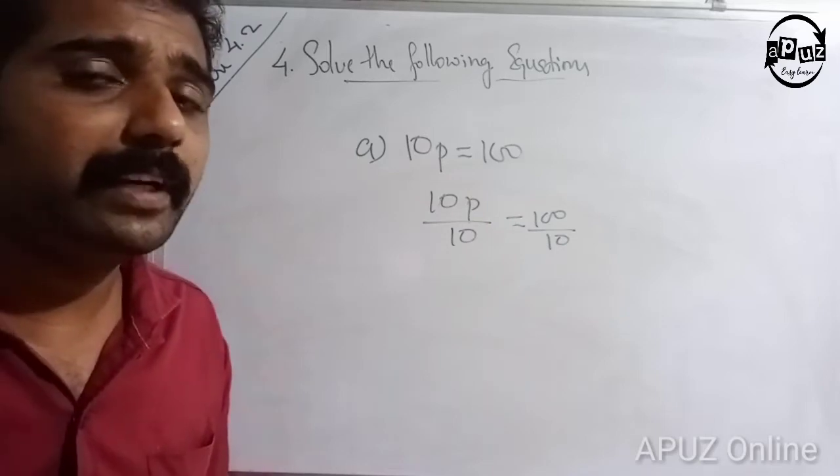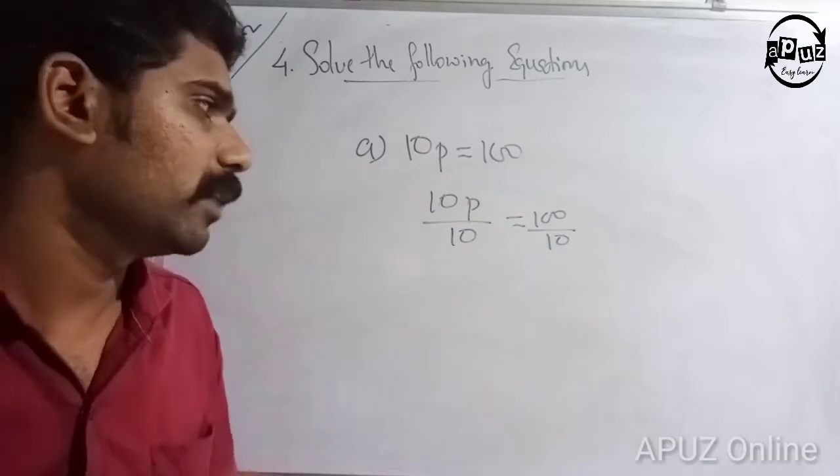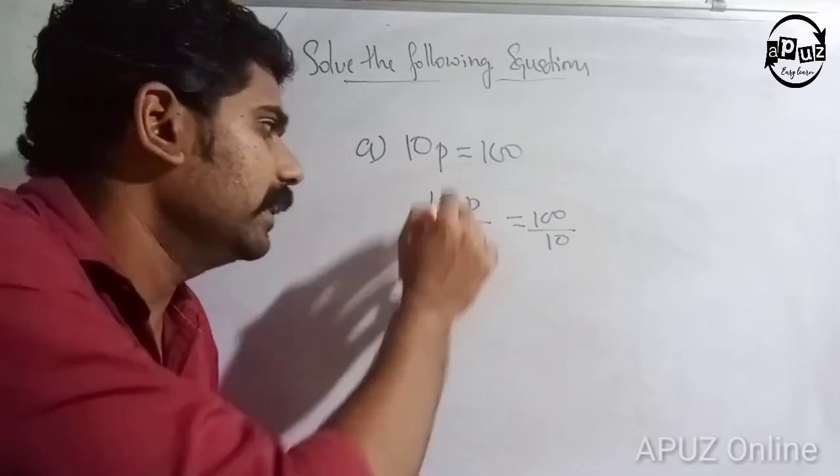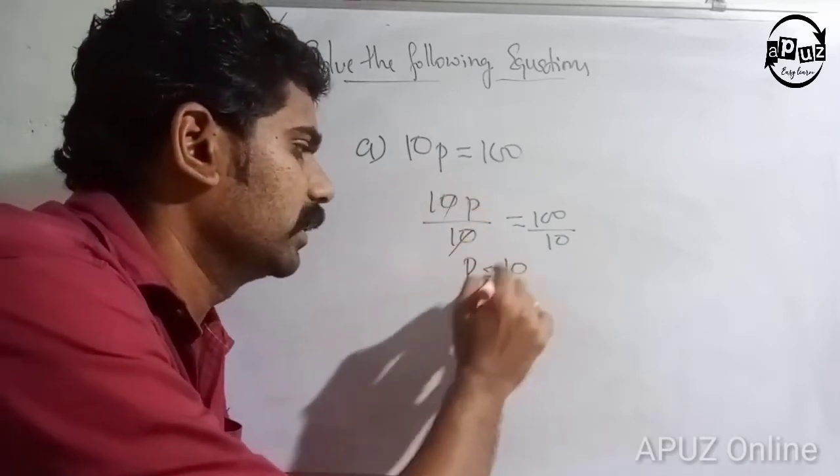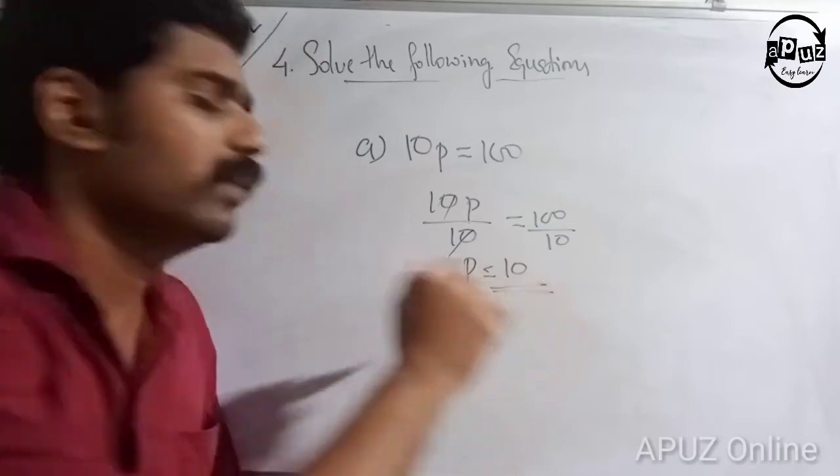10p divided by 10 is equal to 100 divided by 10. The 10s cancel, giving 100 divided by 10.